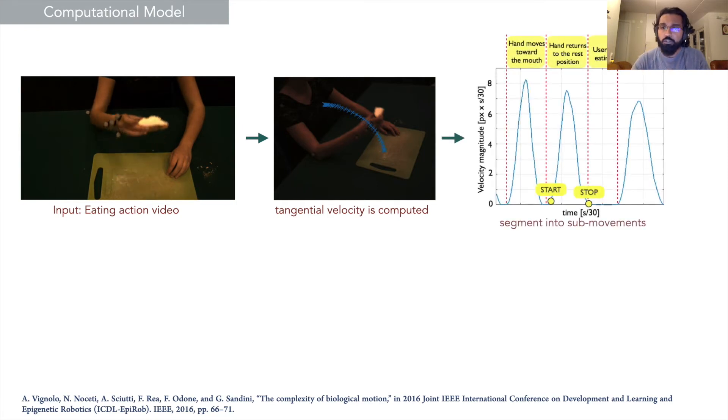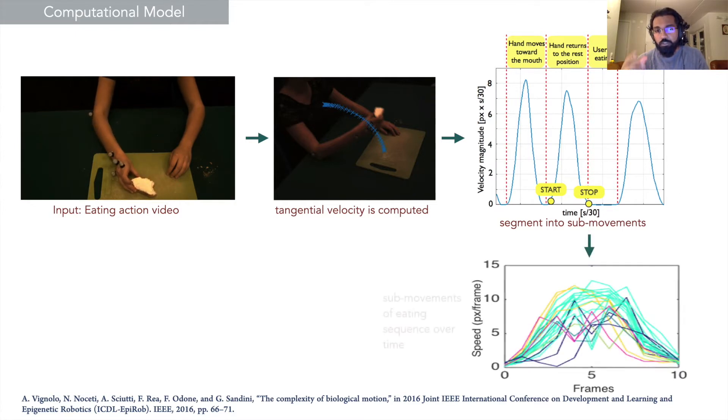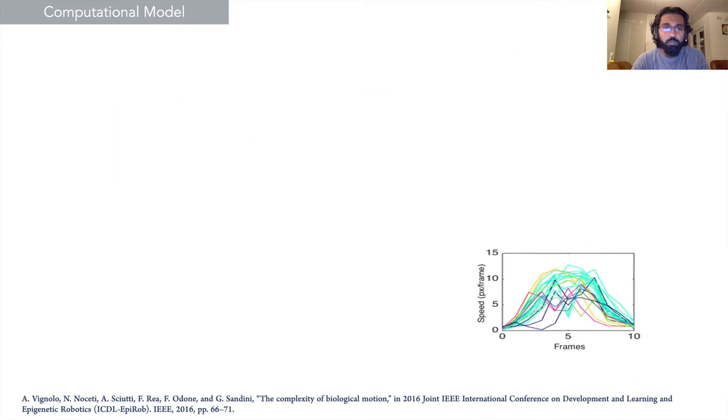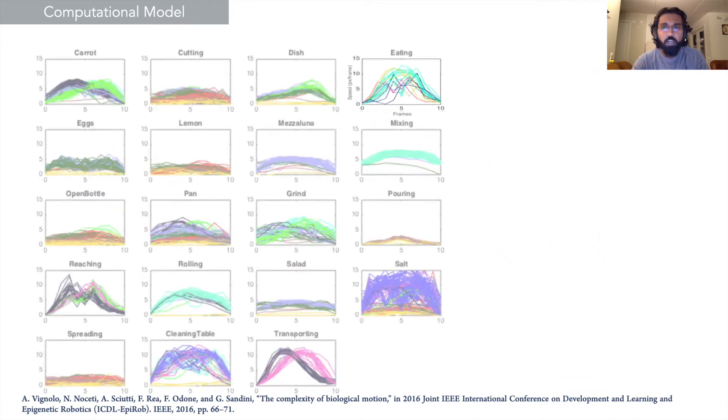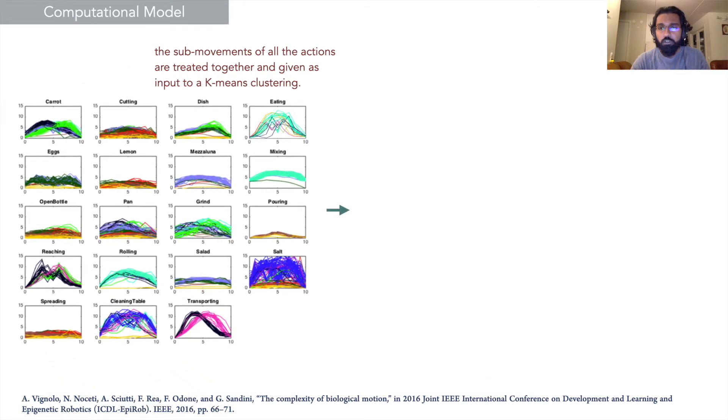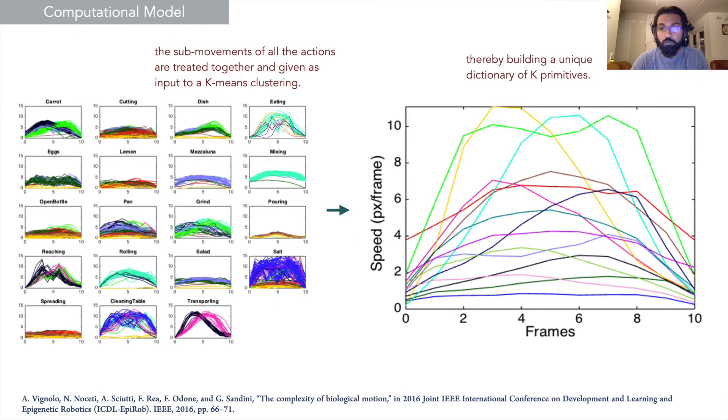Later on, it will segment them into parts based on the local maximum and minimum, which will be then sequenced over time to create the primitives. Here the different colors denote the different primitives. All the primitives are gathered from all of the actions and given as input to K-means clustering, which will give out a dictionary of unique K primitives.